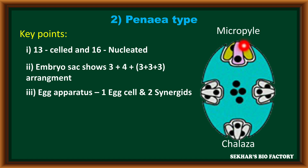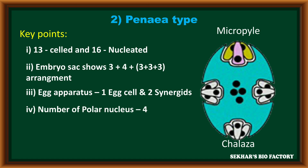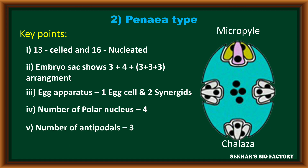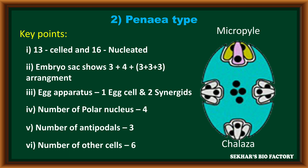Towards the micropylar end, the egg apparatus contains three cells — one egg cell and two synergids. In the central cell, a total of four haploid polar nuclei are present. Towards the chalazal end, it contains three antipodals, and along with that, six additional cells are present on either side of the embryo sac. These are the characters of the Penaea type of embryo sac.